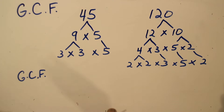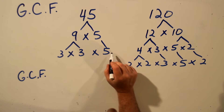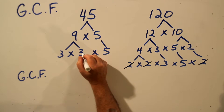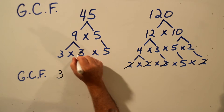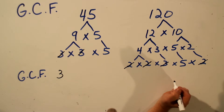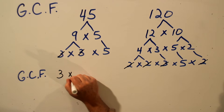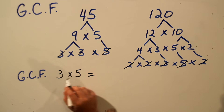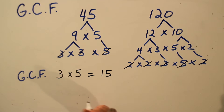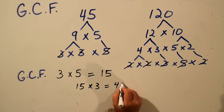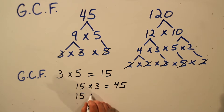To find the greatest common factor, we'll find numbers that are common to both lists. In the 120 list we have 2s, but in the 45 list there are no 2s, so we can eliminate all the 2s. There is a 3 in this list and a 3 in this list, so we'll use the 3 — cross those off. There's another 3 in the 120 list but no more 3s in the 45 list, so we'll cross that one off. And there's a 5 in this list and a 5 in this list, so we'll use the 5. The greatest common factor for 45 and 120 is 3 times 5, which is 15. To check: 15 times 3 is 45, and 15 times 8 is 120.